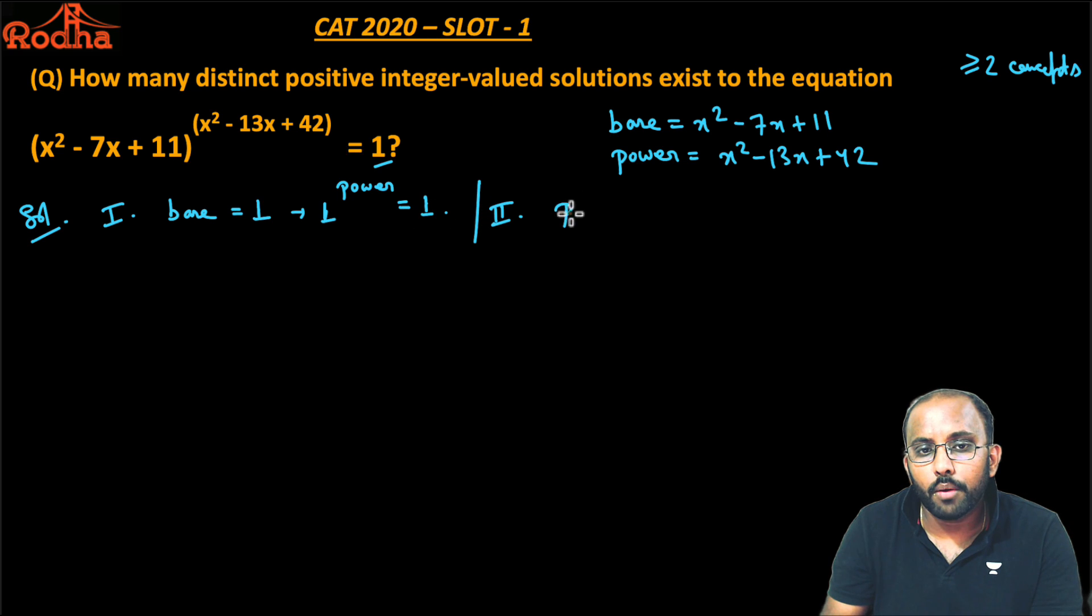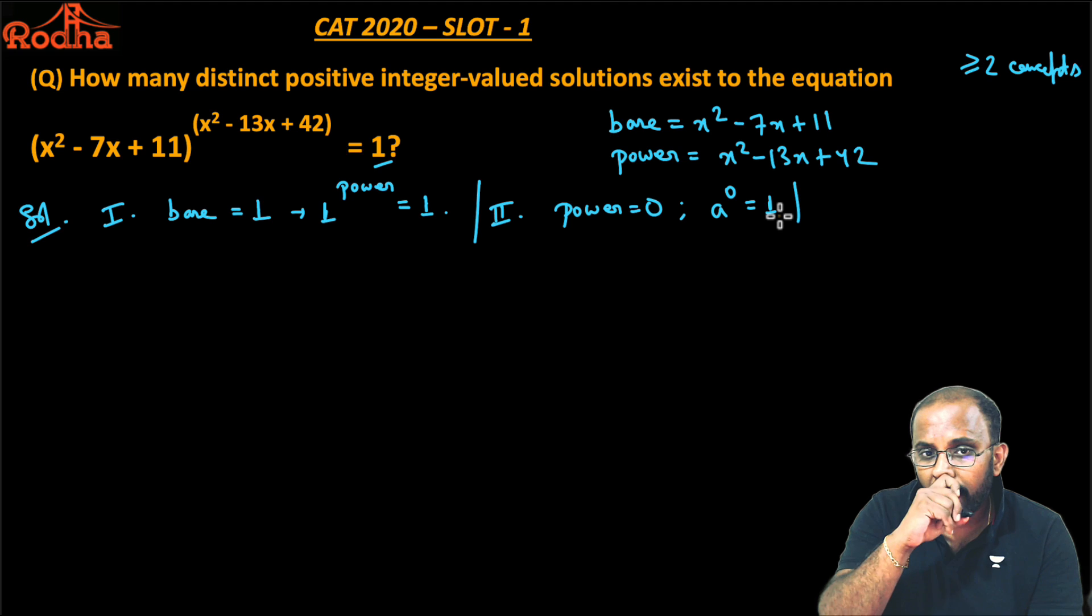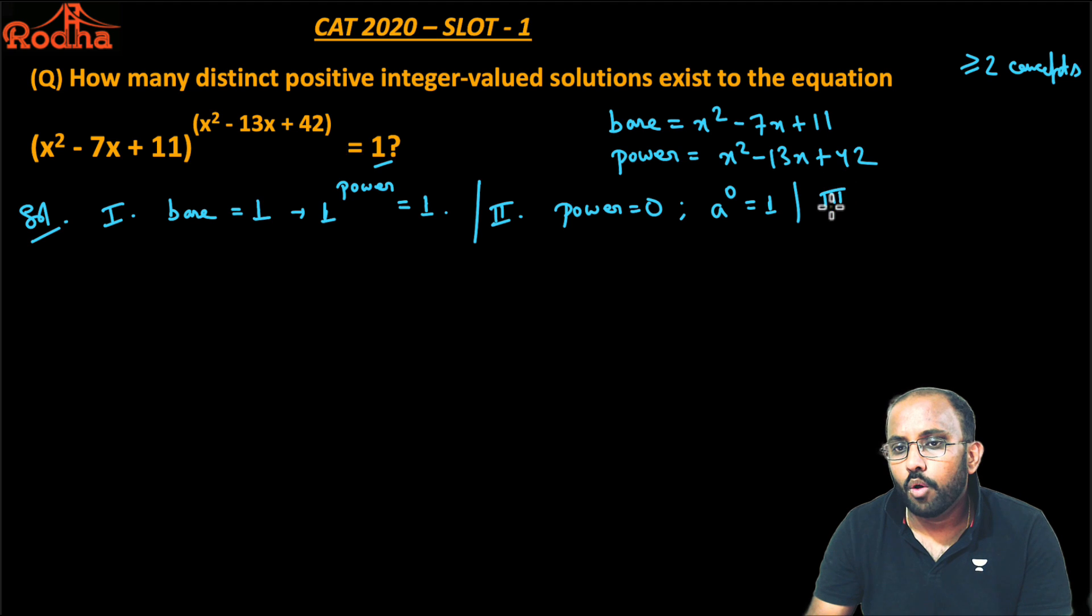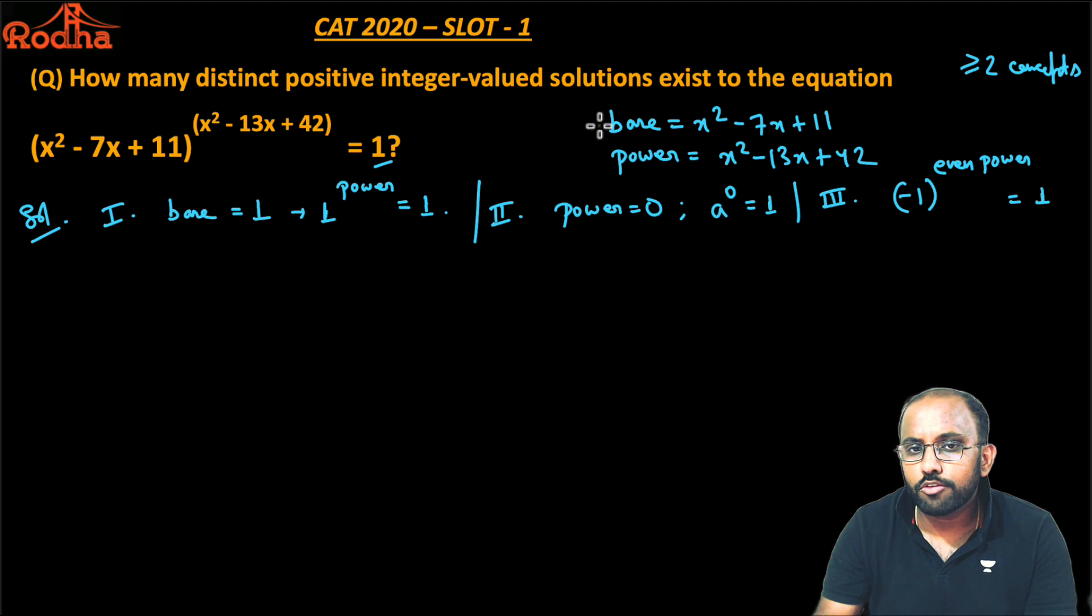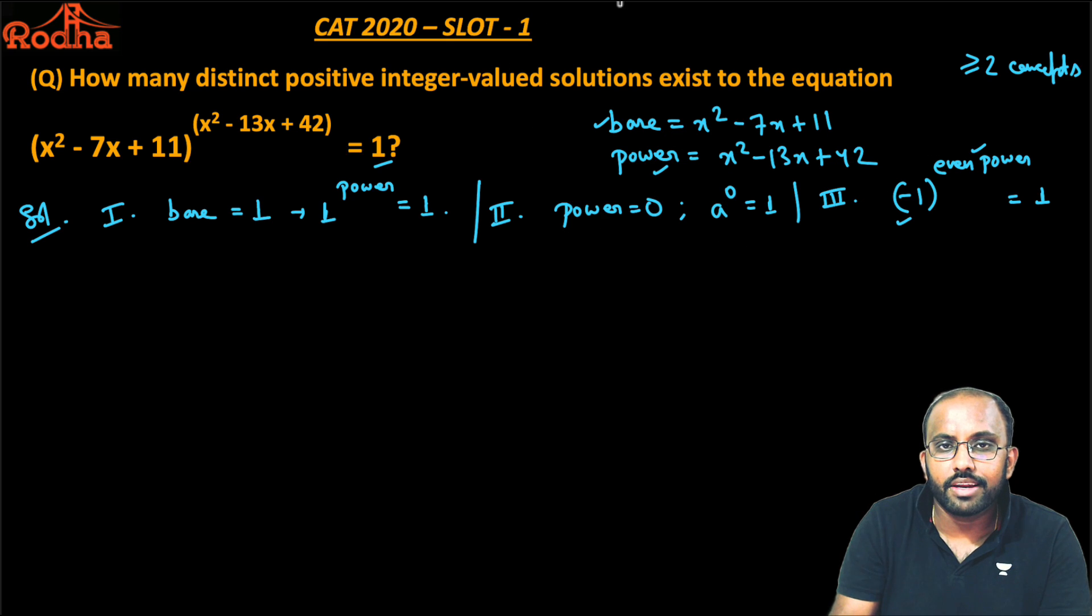The third thing in such questions is that -1 raised to an even power also equals 1. So base equals -1 and the power should be an even number. Take these three things into consideration: cases 1, 2, and 3.